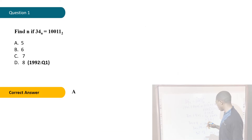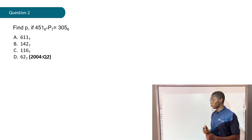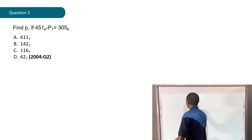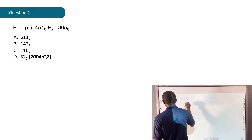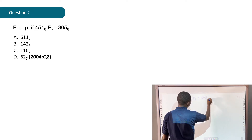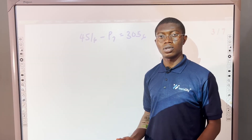Question 2 is from the year 2004. It says: find p if 451 base 6 minus p base 7 equals 305 base 6. Option A is 611 base 7, option B is 142 base 7, option C is 116 base 7, and option D is 62 base 7. Try it out before checking the solution.